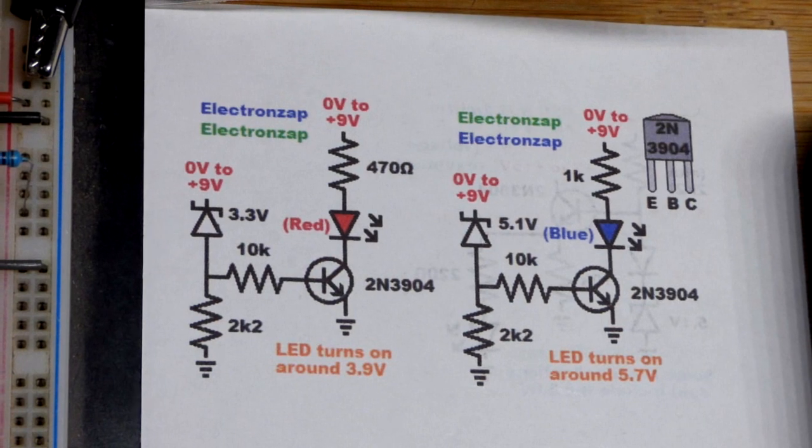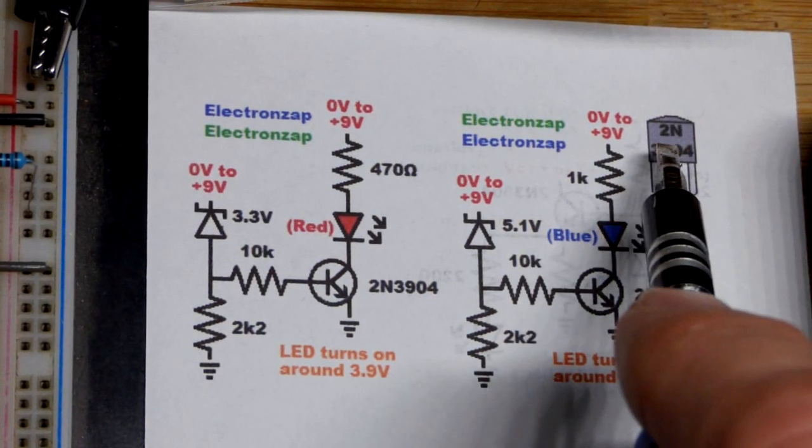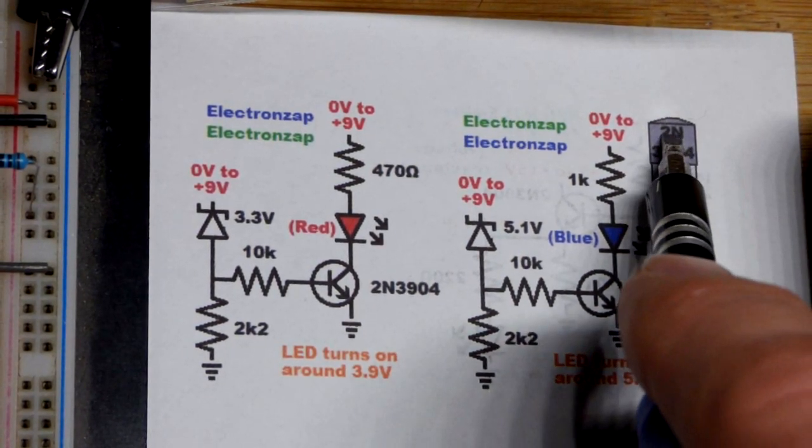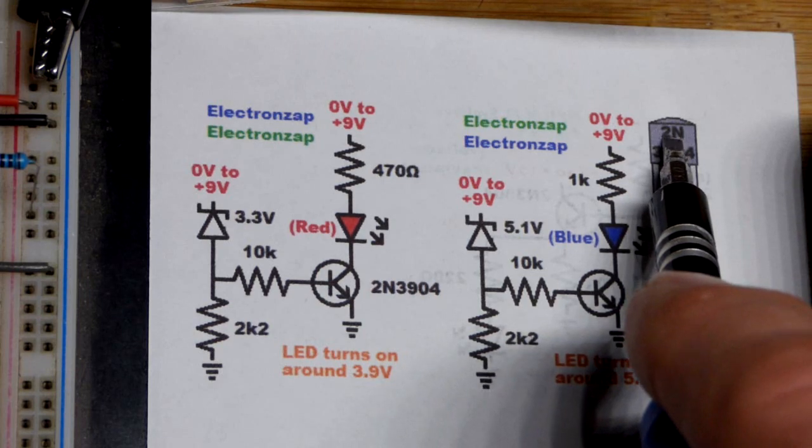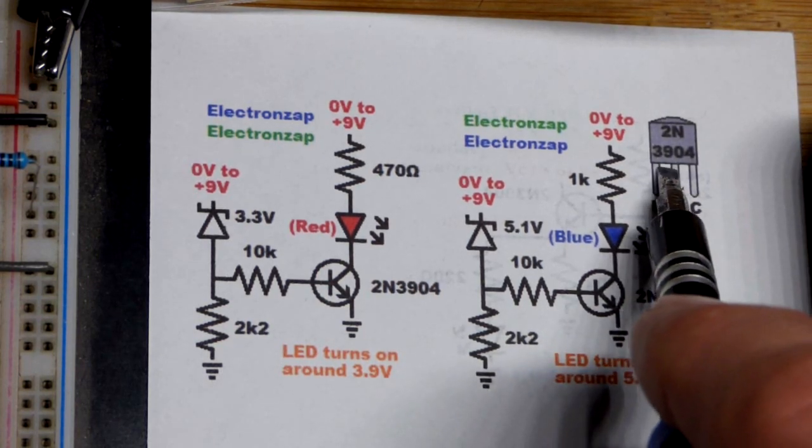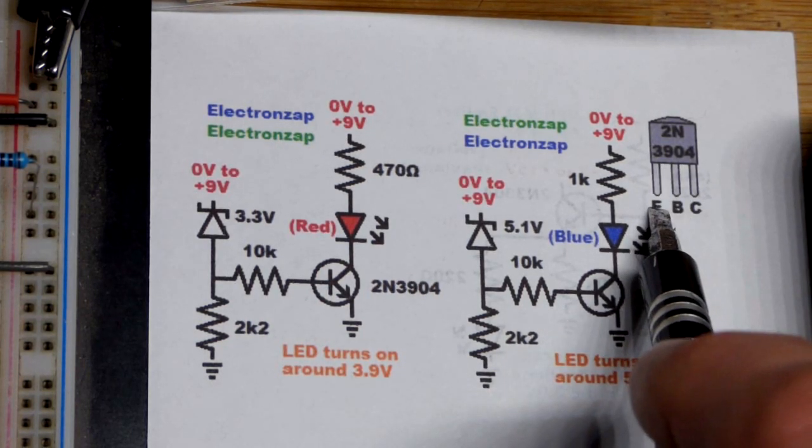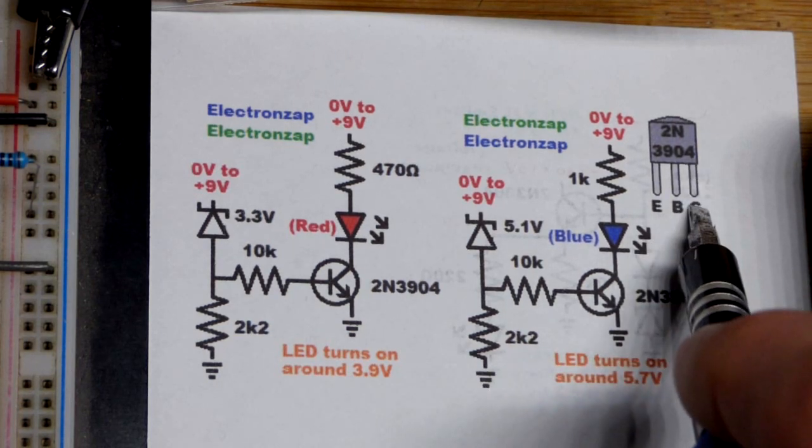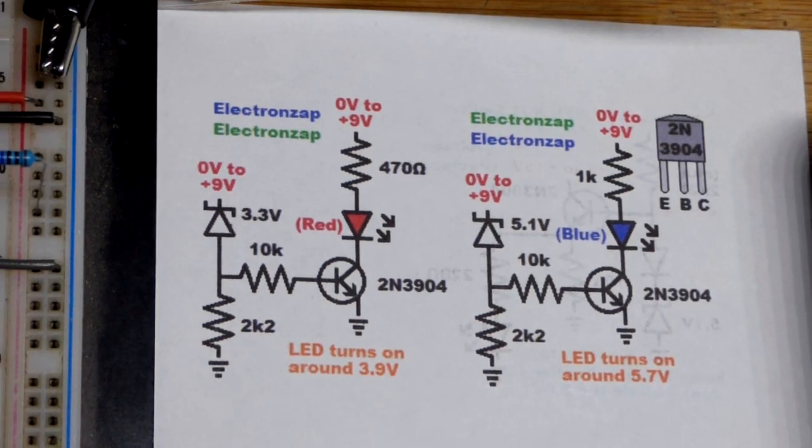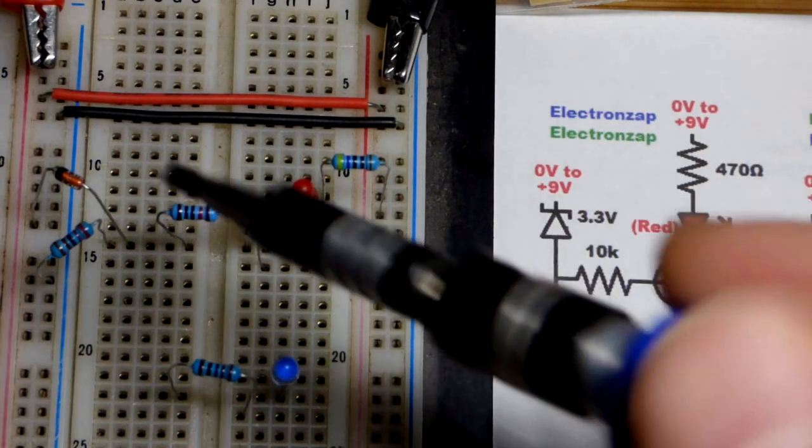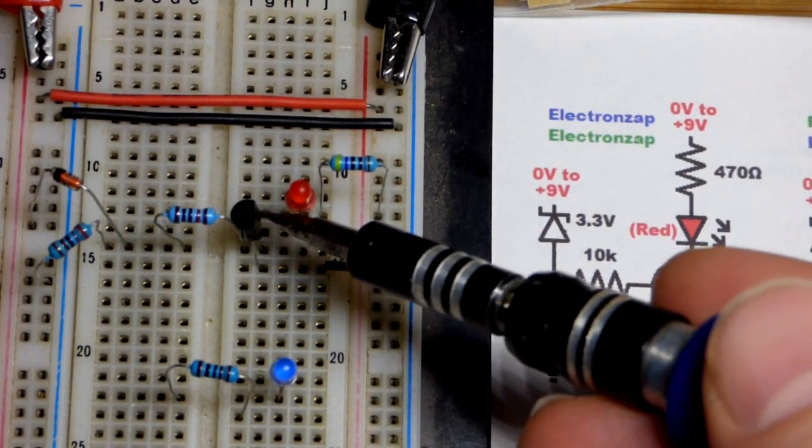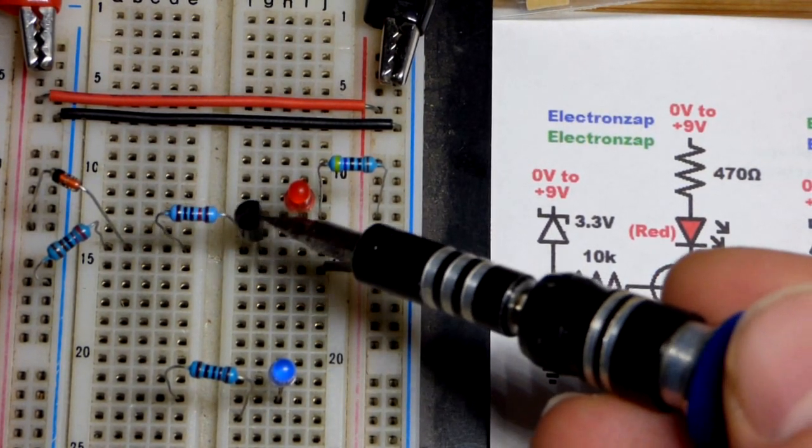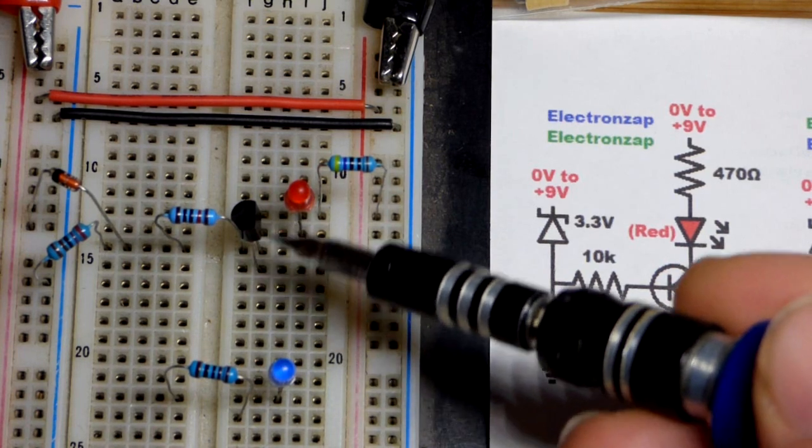Whether it is NPN or PNP, if it starts with 2N and it's a bipolar junction transistor, there's other components completely different that start with 2N. But if they're bipolar junction transistors, left pin should be emitter, middle pin should be base and right pin should be collector. That's how it's always been when I use these. But I always look up the data sheet when you get a new one for the pin layout.